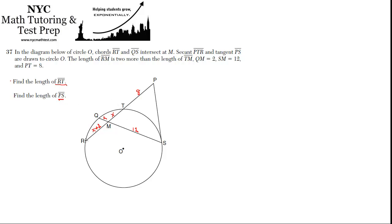So in order to find the length of RT, we basically have to find X, right? And then we'll know RM and MT, and we can just add them together. So let's for a minute just forget about TP and PS out here. We have enough information just inside the circle to—we have two chords that intersect at a point that isn't the center of the circle.